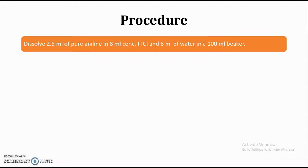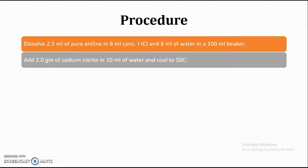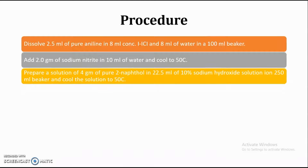First point: dissolve 2.5 ml of pure aniline in 8 ml of concentrated HCl and 8 ml of water in a 100 ml beaker or conical flask. So first, we have to prepare a solution of aniline in HCl and water. Then, add 2 grams of sodium nitrite in 10 ml of water and cool to 5 degrees Celsius — in a separate container. Prepare a third solution: 4 grams of pure 2-naphthol dissolved in 22.5 ml of 10% sodium hydroxide solution, and cool that solution to 5 degrees Celsius.